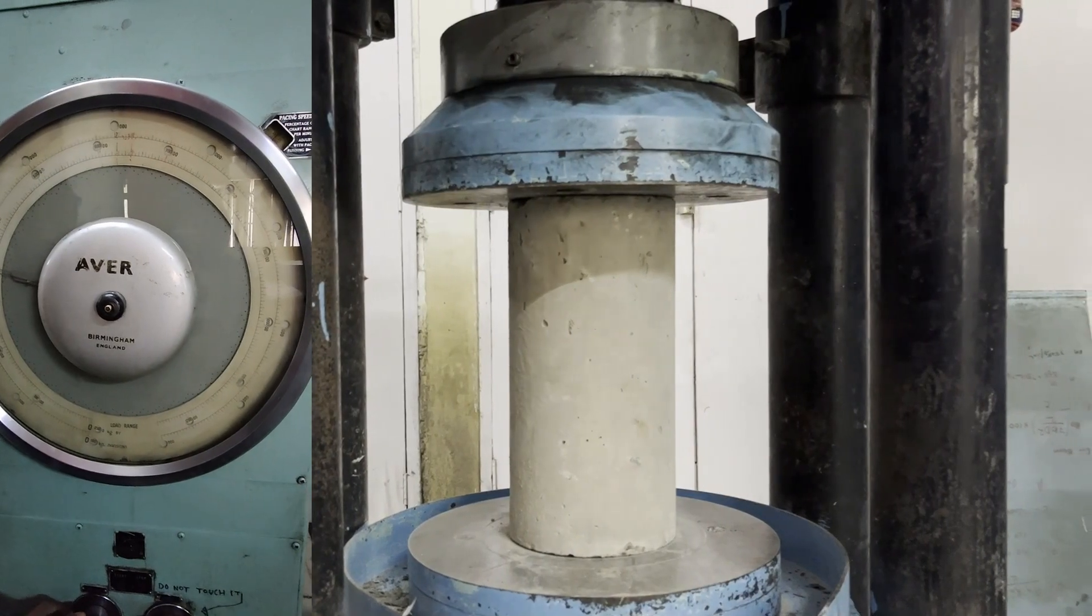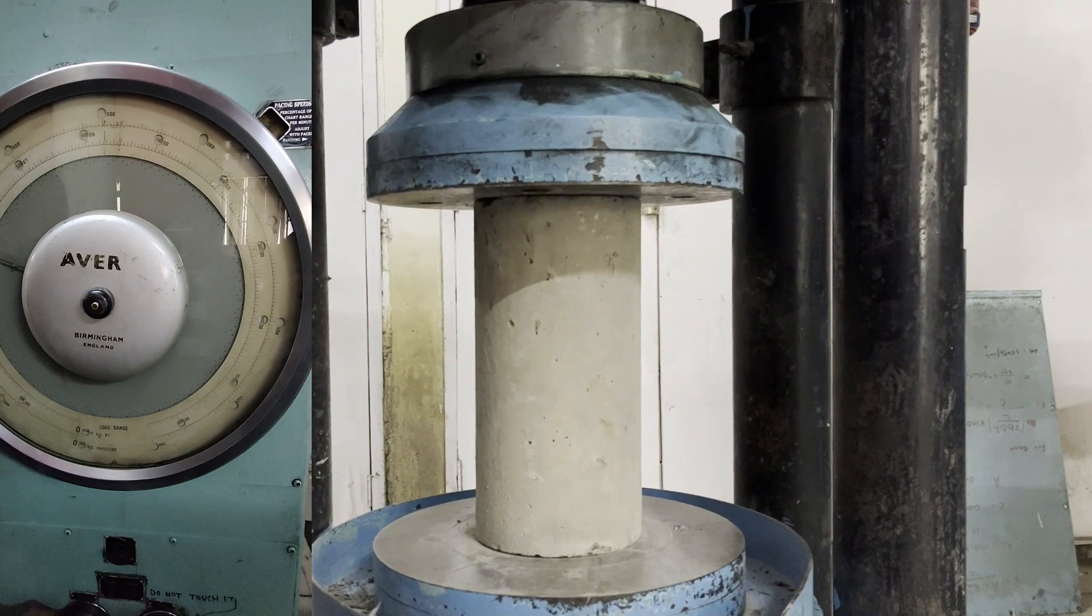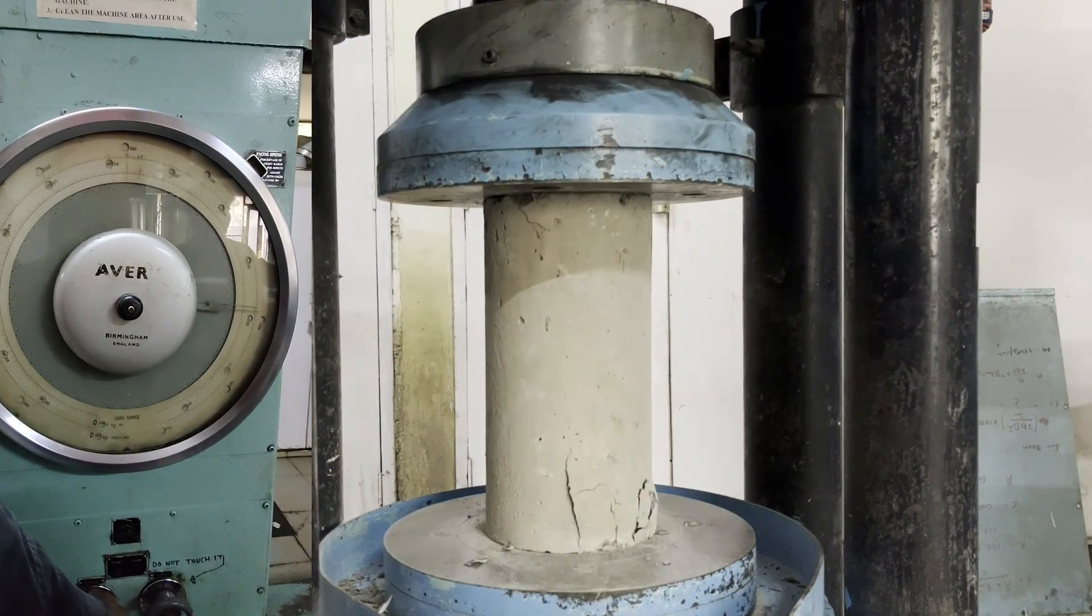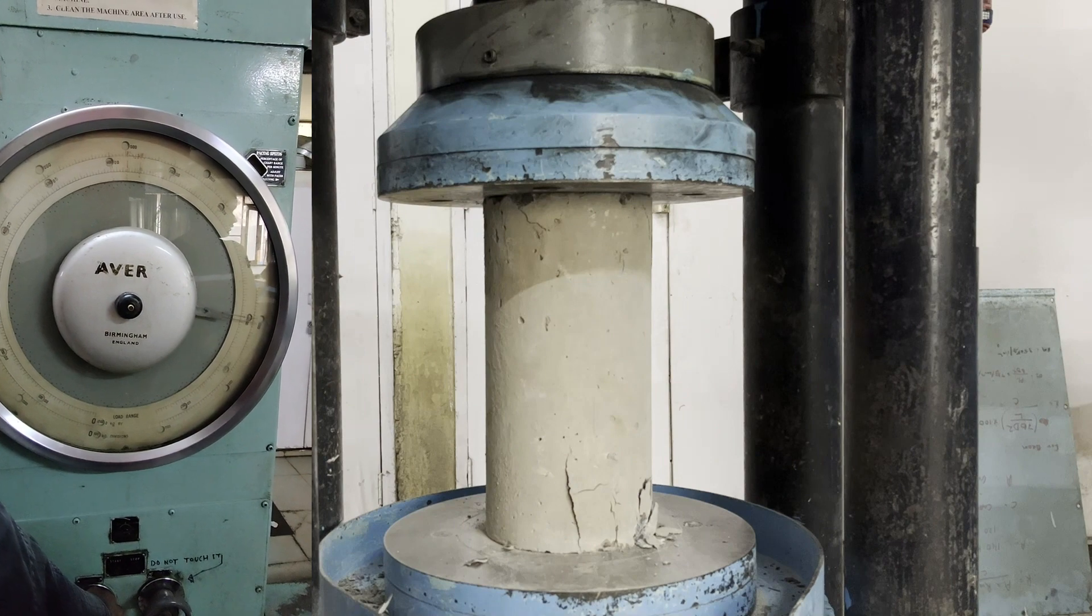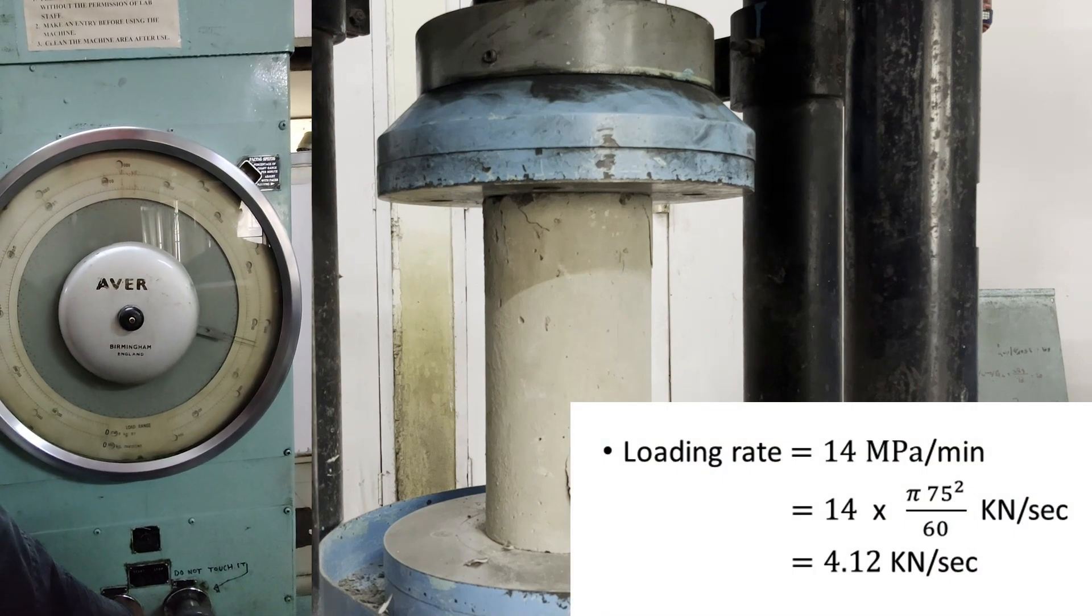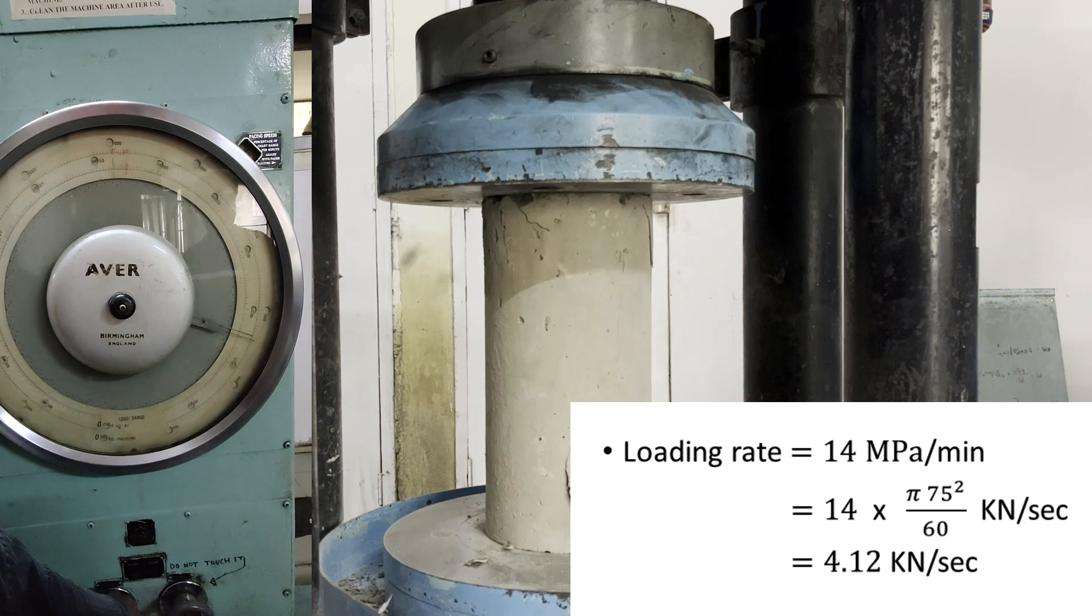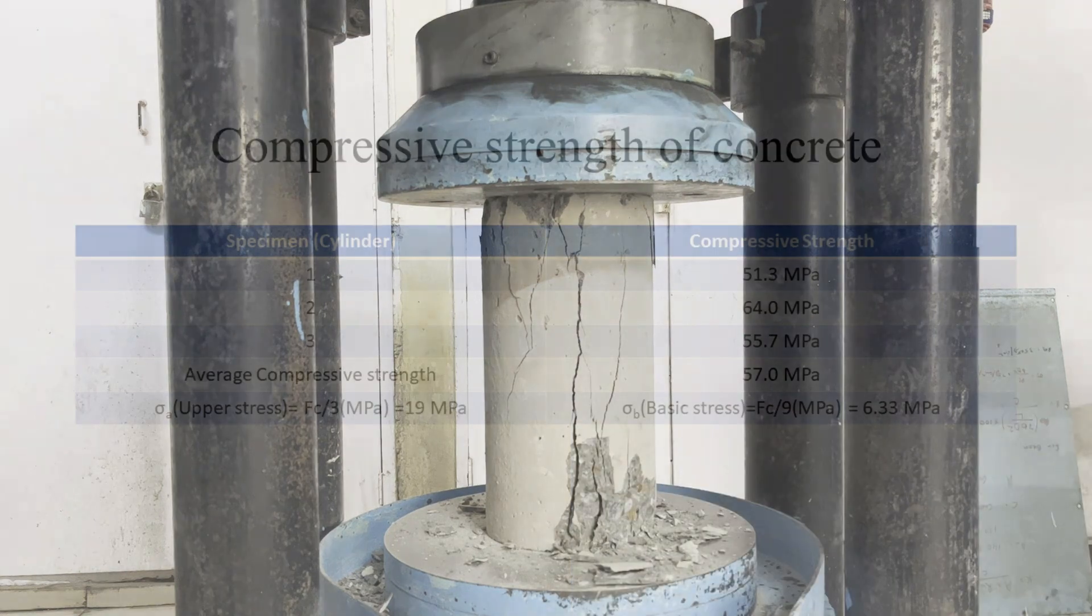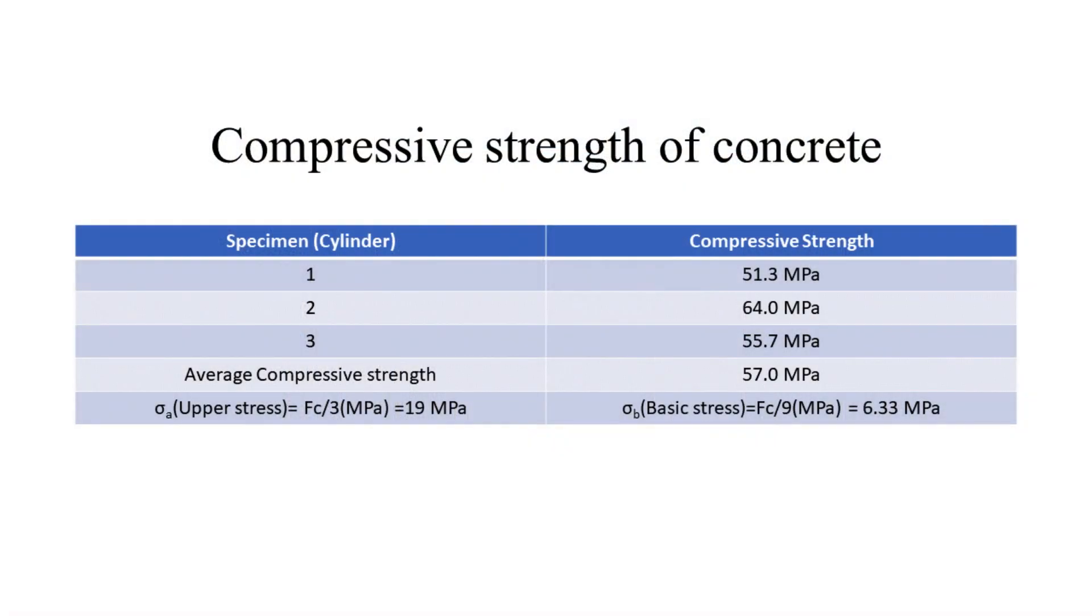Place the specimen in the CTM. Cylinder specimens shall be compressed perpendicularly to the direction of casting. The load shall be applied without shock and increased continuously at a nominal rate of 14 MPa per minute. For our cylinder this translates to 4.12 kN per second. Repeat the testing for two other cylinder specimens. Average compressive strength of cylinder came out to be 57 MPa.